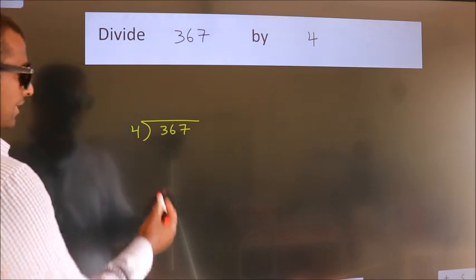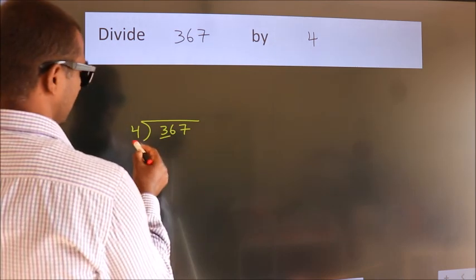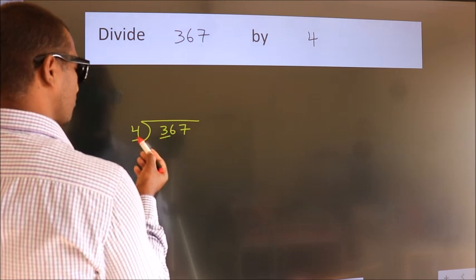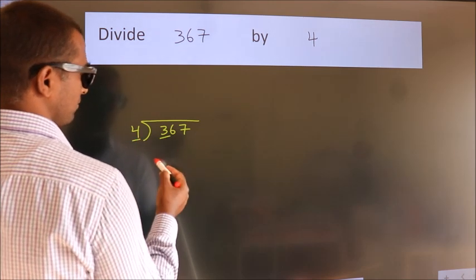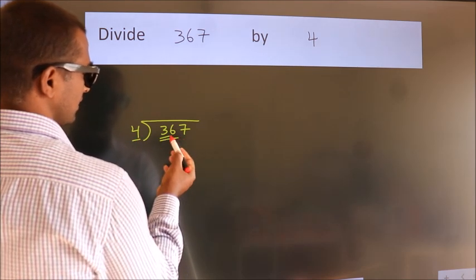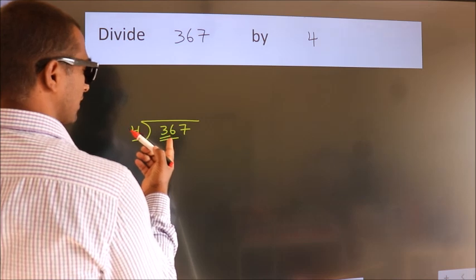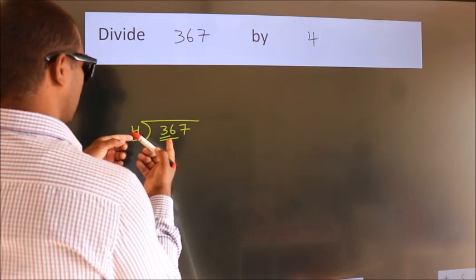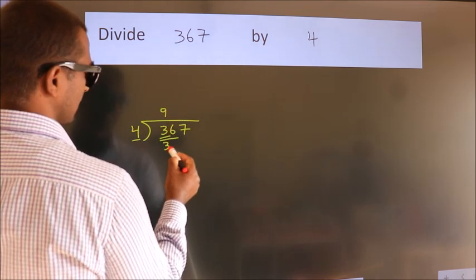Next, here we have 3, here 4. 3 is smaller than 4, so we should take 2 numbers: 36. When do we get 36 in the 4 table? 4 nines, 36.